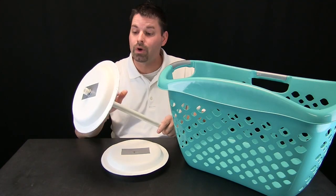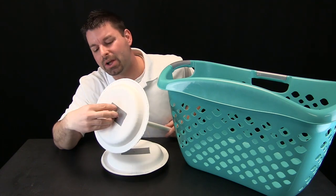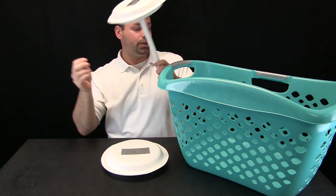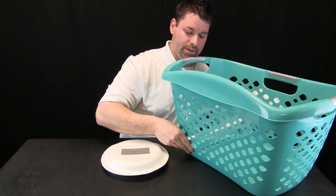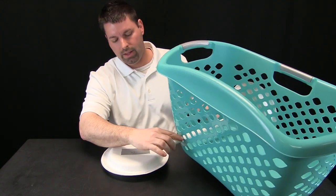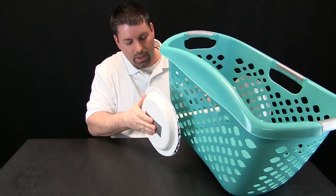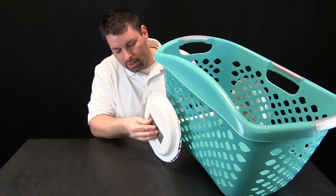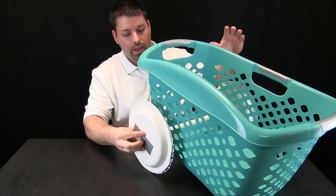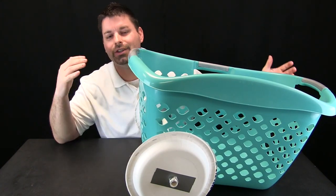So you can see we have already attached one of our wheels to our axle. Notice we put tape over the hole just to make our wheel more secure. Now all I need to do is push it through the holes in my basket and slide on my other wheel. Line it up, and now my laundry basket car is starting to take shape.